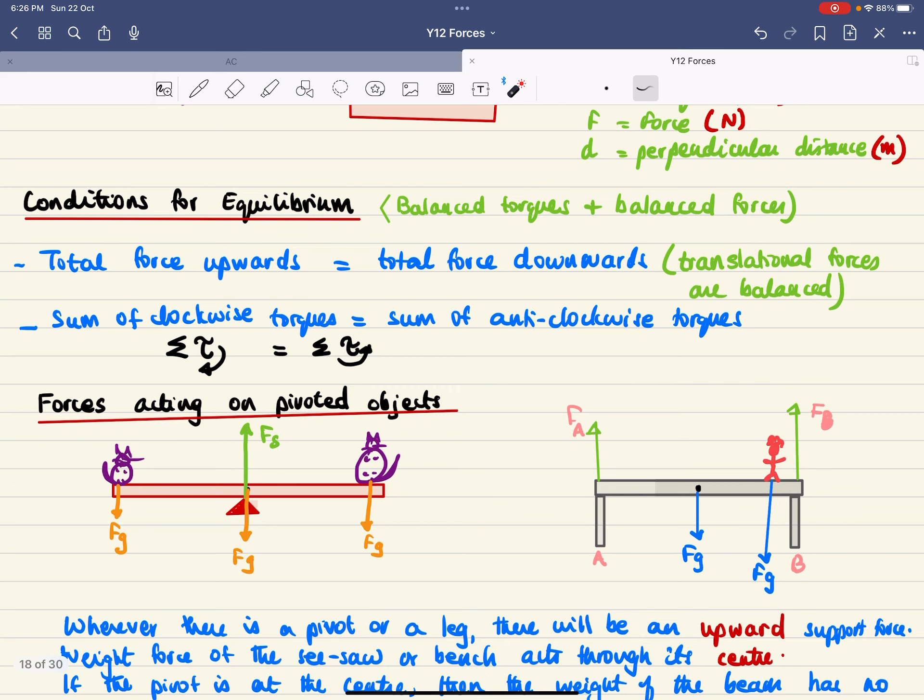If there's a pivoted object—for example, with two cats on a beam—the forces acting include gravity pulling down wherever the cats are. At the pivot, if the beam is uniform, its weight acts downward through the center. The pivot or stand provides a support force upward. The total support force equals the sum of all downward forces. That's why the green arrow appears longer—it represents the sum of all three downward forces.